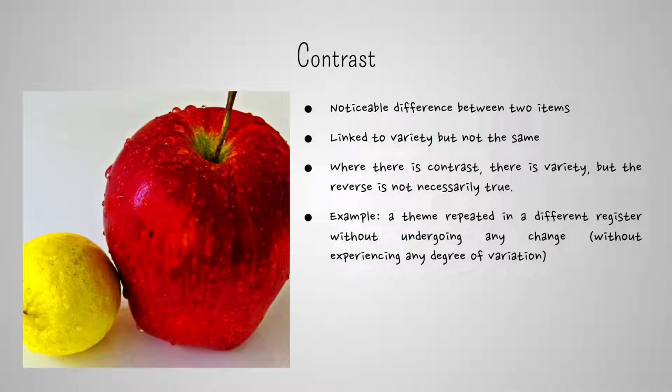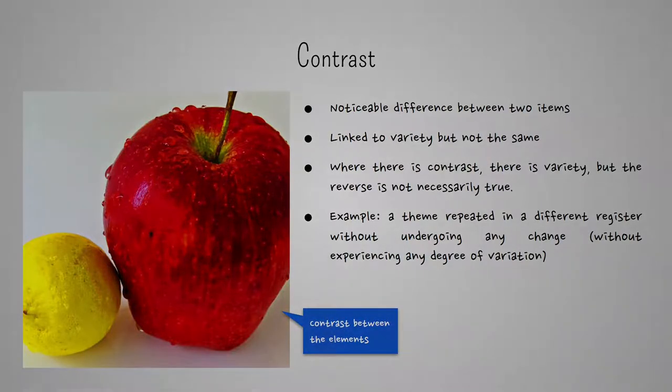The image on the left has unity, because the two objects are similar, both are fruits, and variety, because they both have differences in color and size. At the same time, there is contrast between the two, because there is a noticeable difference between them.